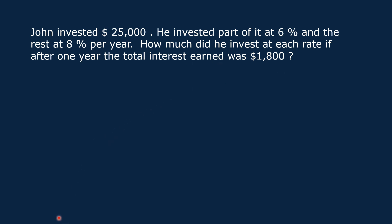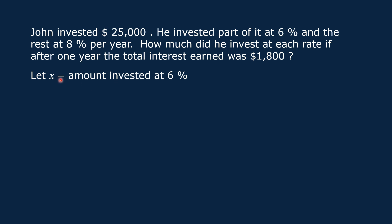Let us represent by X the amount invested at 6%. So, if we subtract this amount represented by X from $25,000, we get the amount invested at 8%. So, $25,000 minus X is the amount invested at 8%.